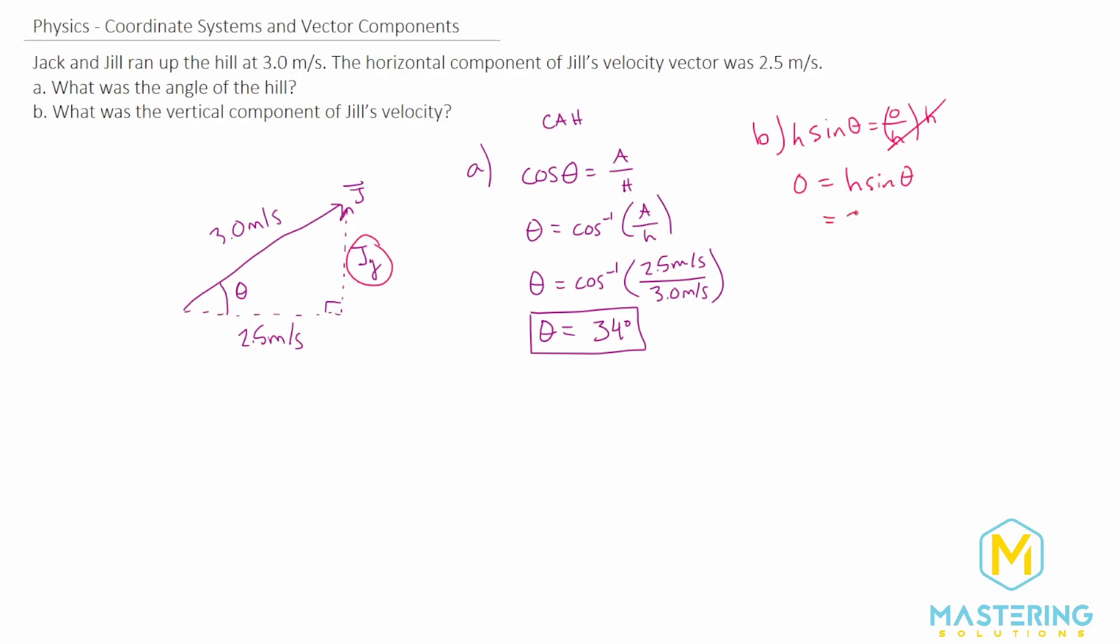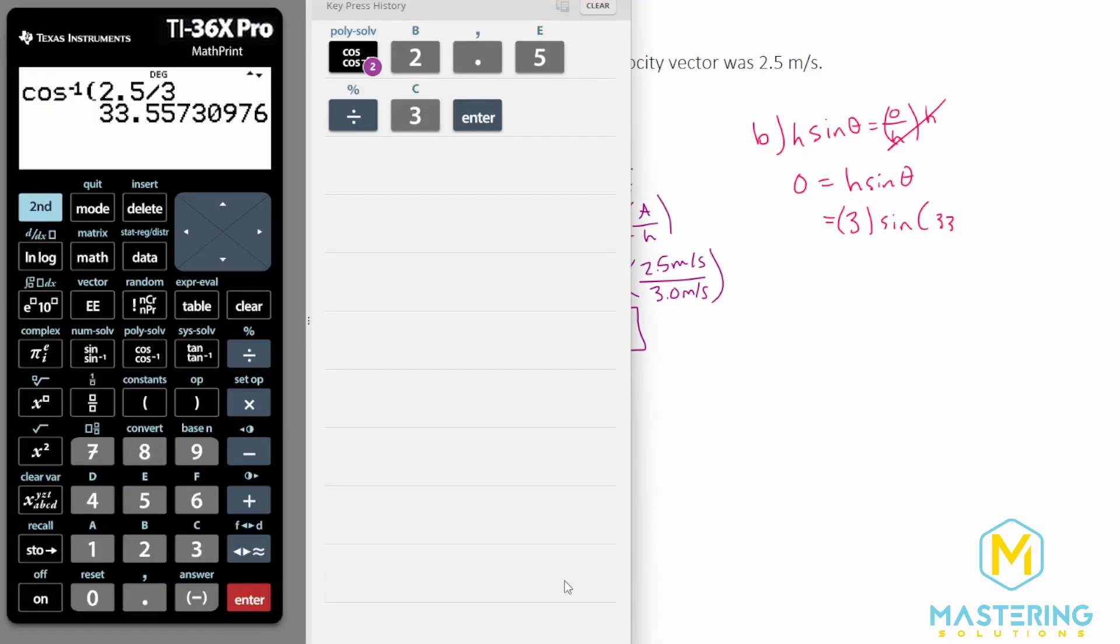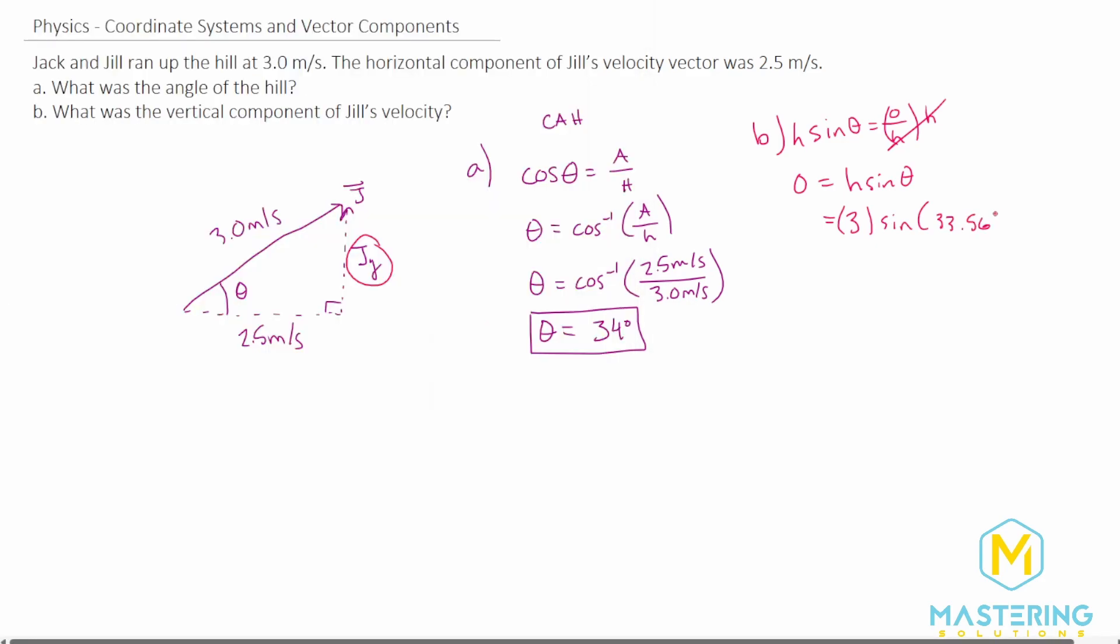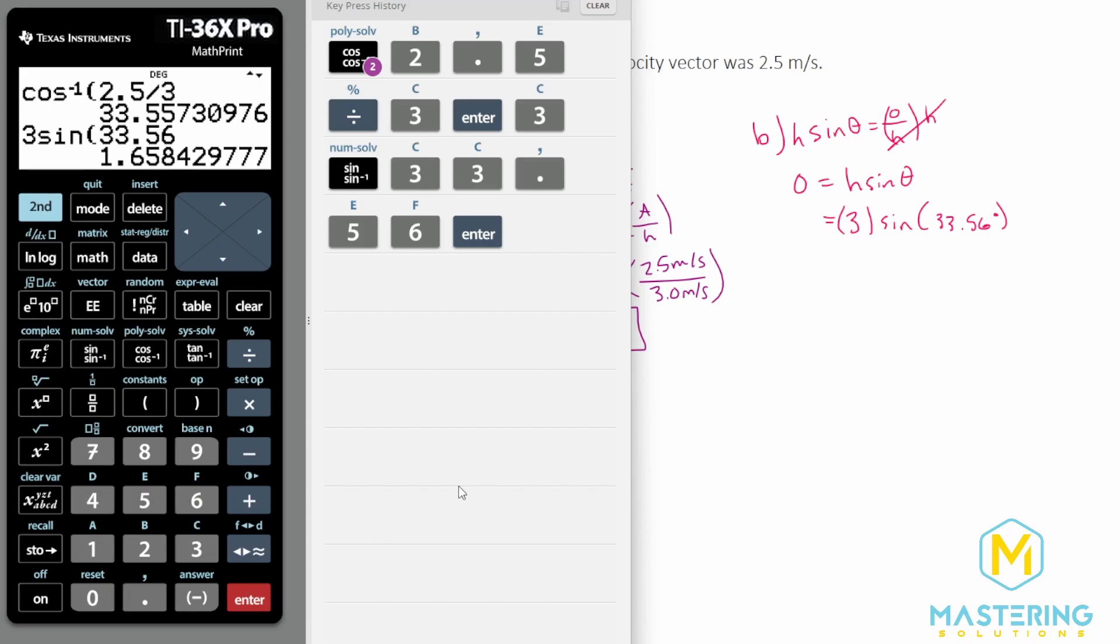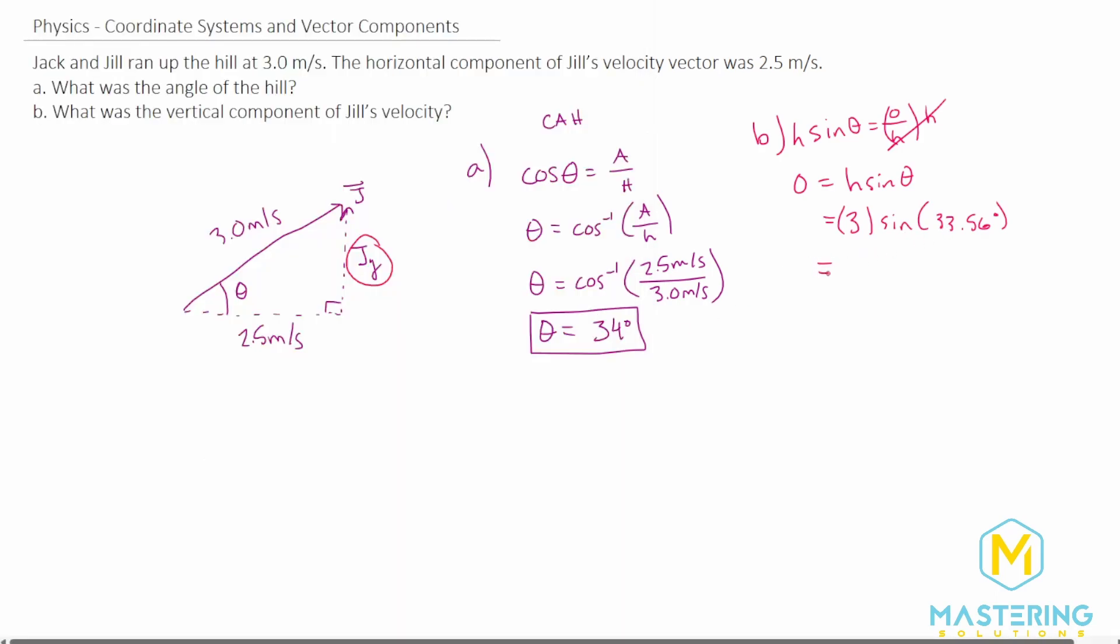So that will be equal to 3 meters per second times the sine of the angle, which we said was 34, but we'll use the exact value, which was 33.56 degrees. So 3 times the sine of 33.56 gives us 1.65. So we'll round that to 1.7. So the opposite or vertical component is 1.7 meters per second.